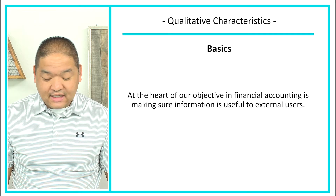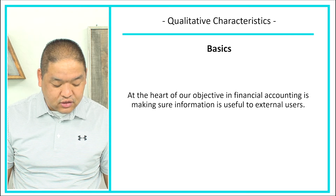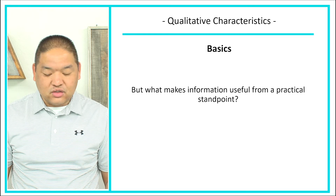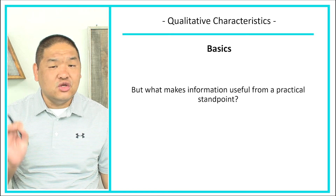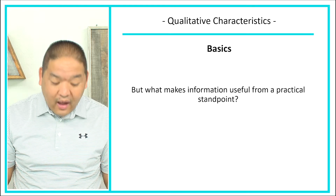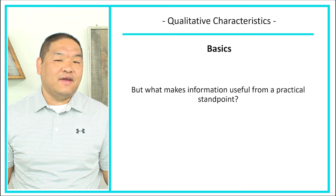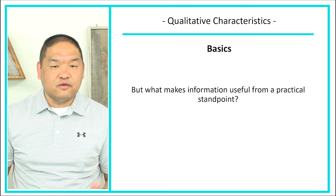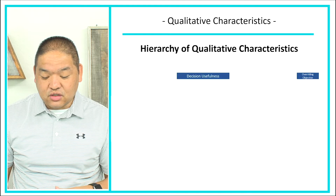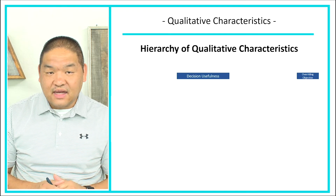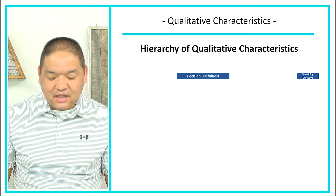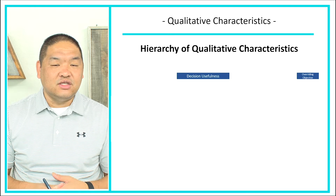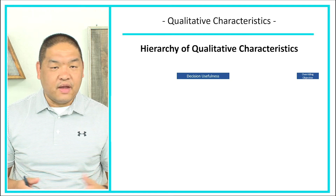At the heart of our objective in financial accounting is to make sure information is useful to external users. But what makes information useful from a practical standpoint? How do we know something is useful to our investors? We've got these qualitative characteristics that we can follow to ensure that financial statements become useful to our investors. We've got something called the hierarchy of qualitative characteristics.